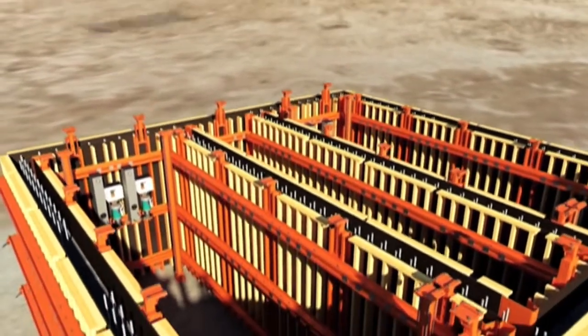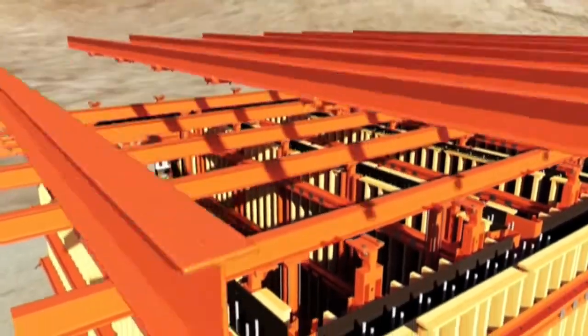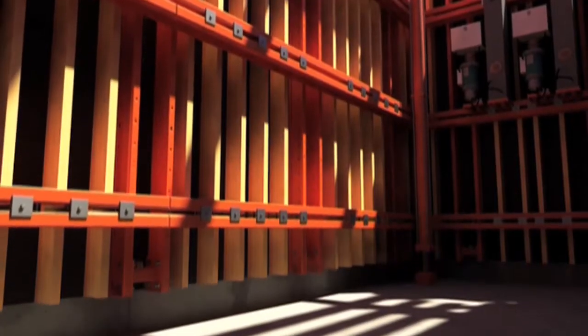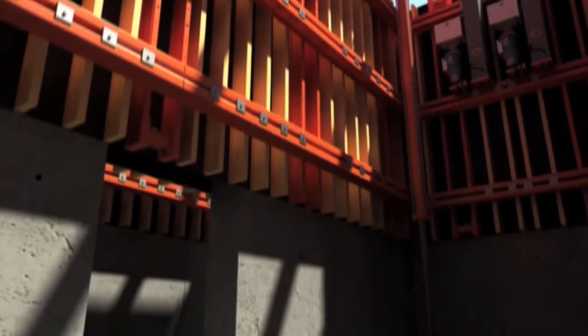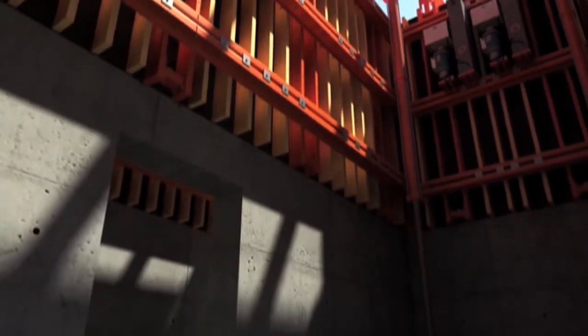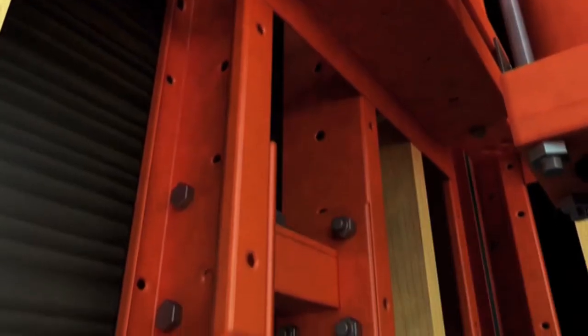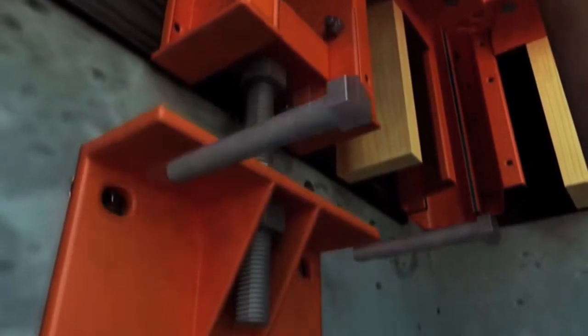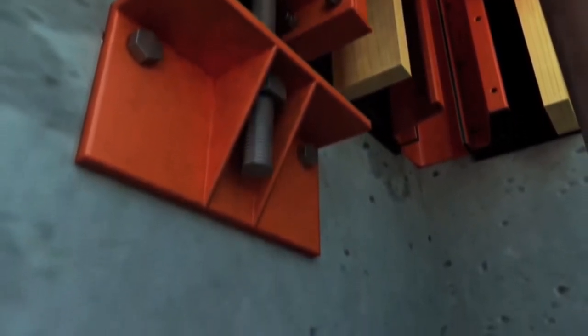The next stage is to fit the grid of primary and secondary steel beams, off which the internal and external forms are hung. The system is then raised to the next pour level. Wall brackets are bolted into inserts cast in with the previous pour. These brackets support the formwork once in the lifted position.